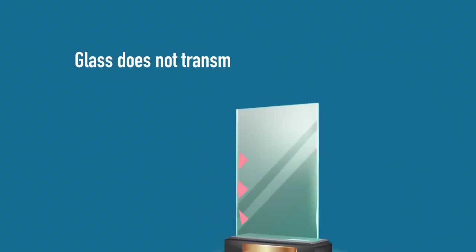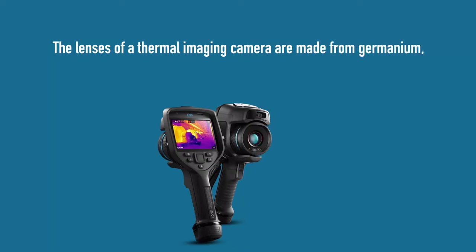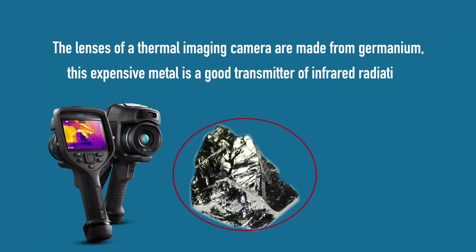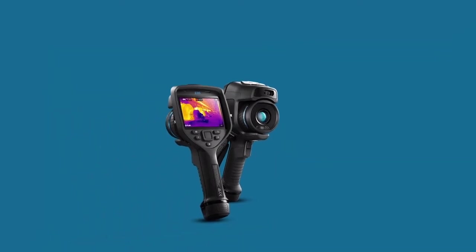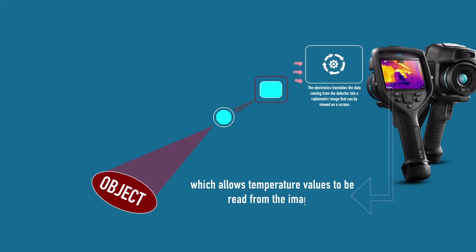But how does a thermal imaging camera work? Glass does not transmit infrared radiation well. And so the lenses of a thermal imaging camera are made from germanium. This expensive metal is a good transmitter of infrared radiation. Infrared energy coming from an object is focused by the optics onto an infrared detector. The detector sends the information to sensor electronics to process the image. The electronics translate the data coming from the detector into a radiometric image that can be viewed on a screen, which allows temperature values to be read from the image.